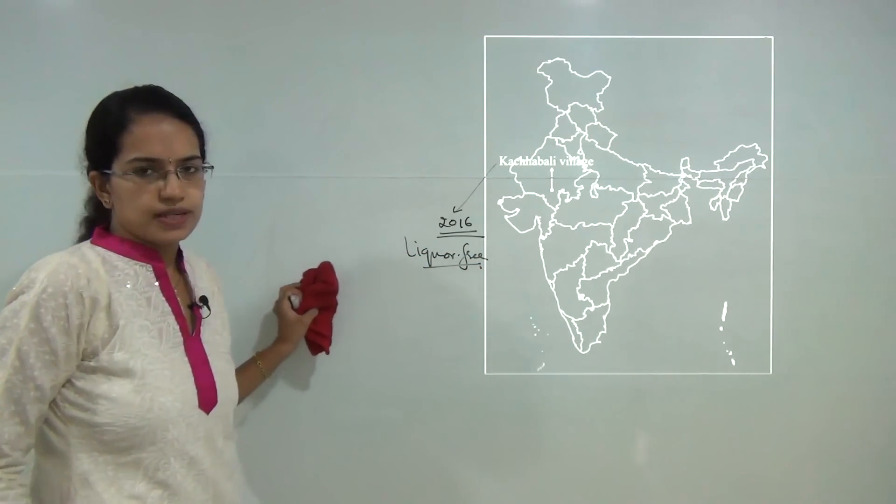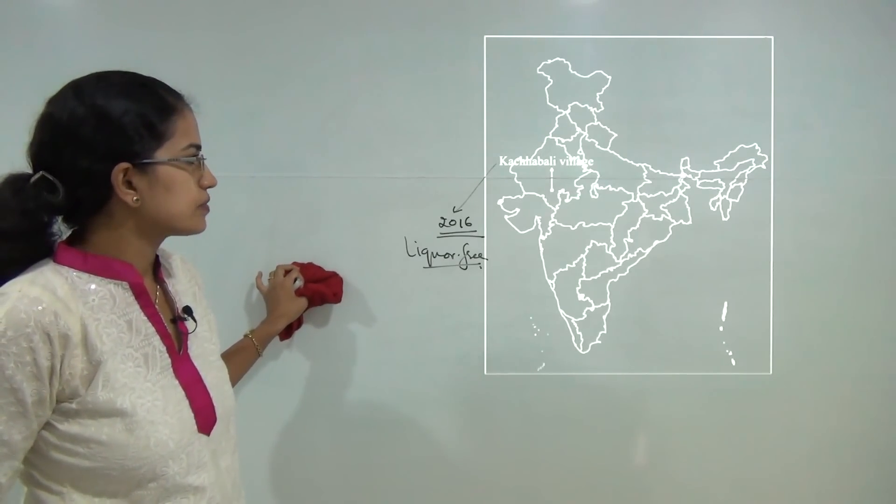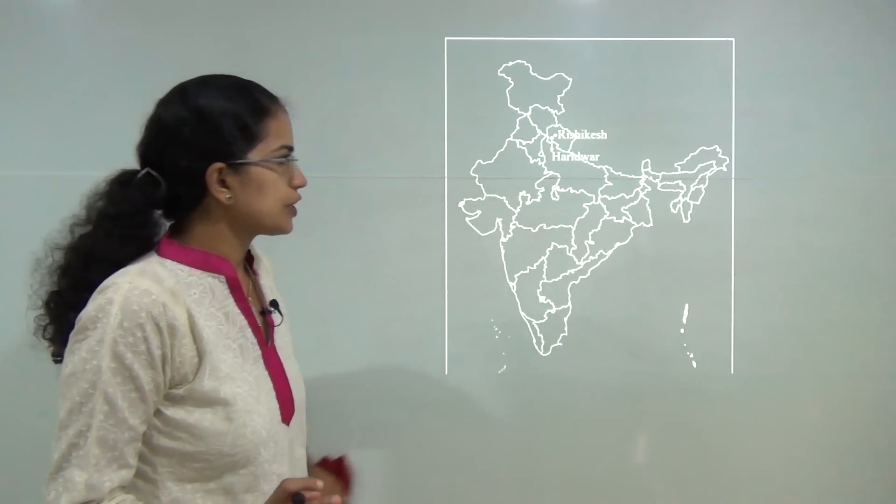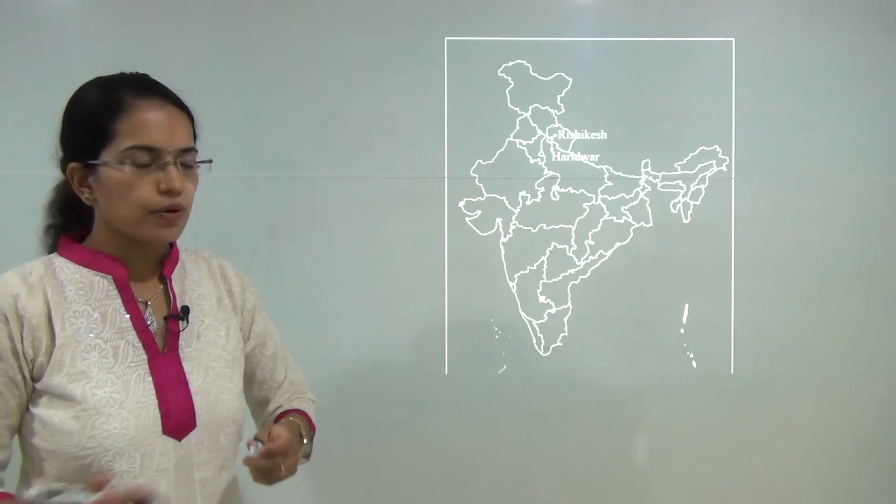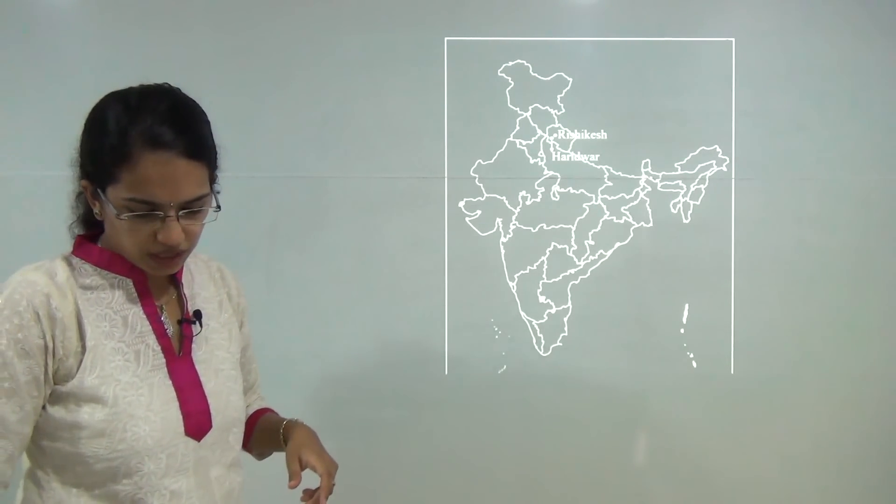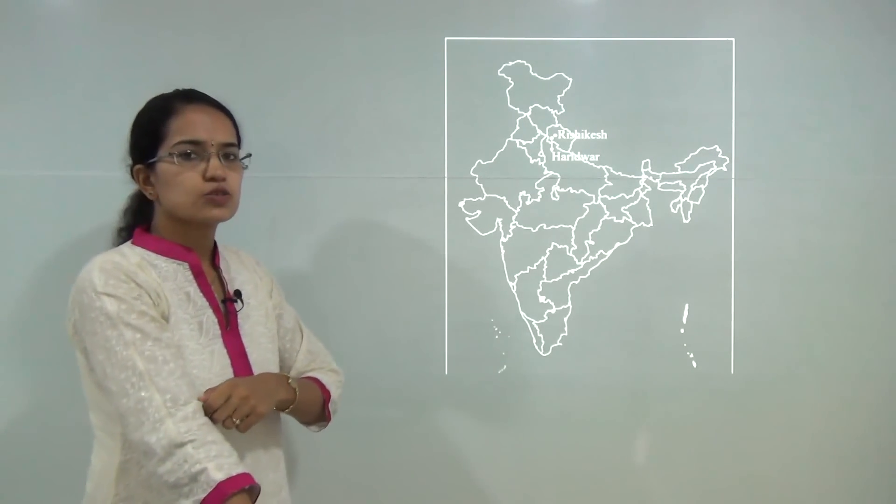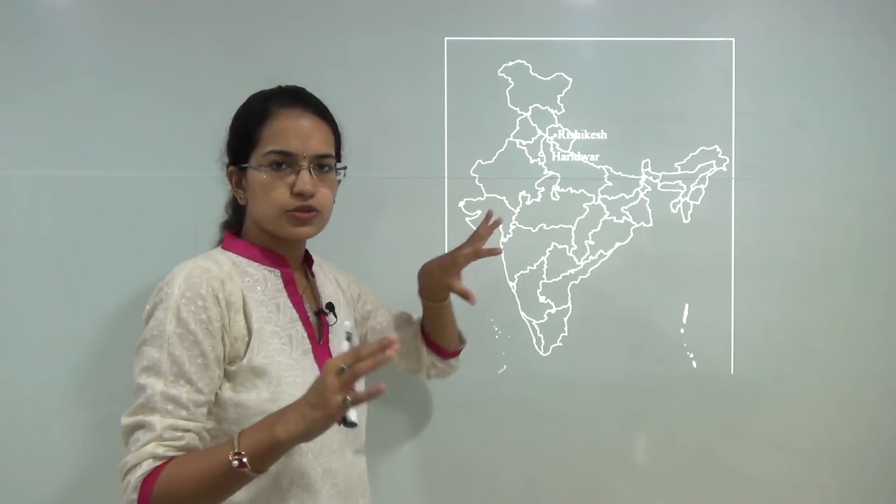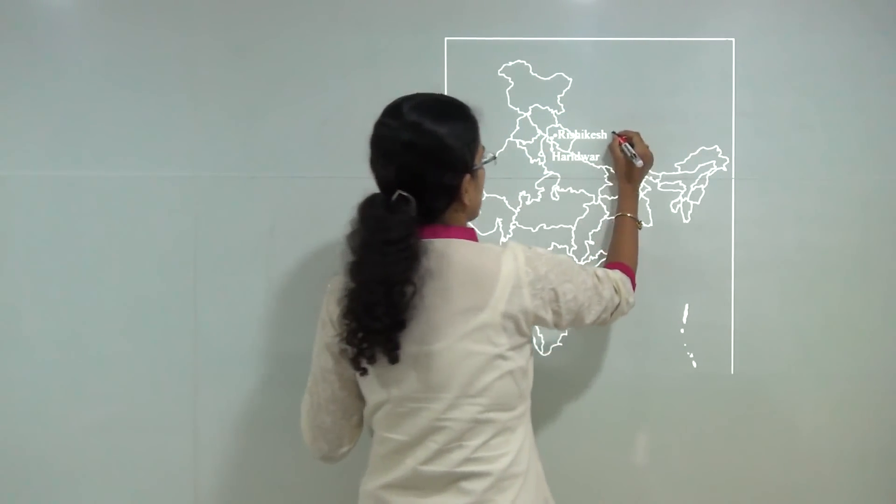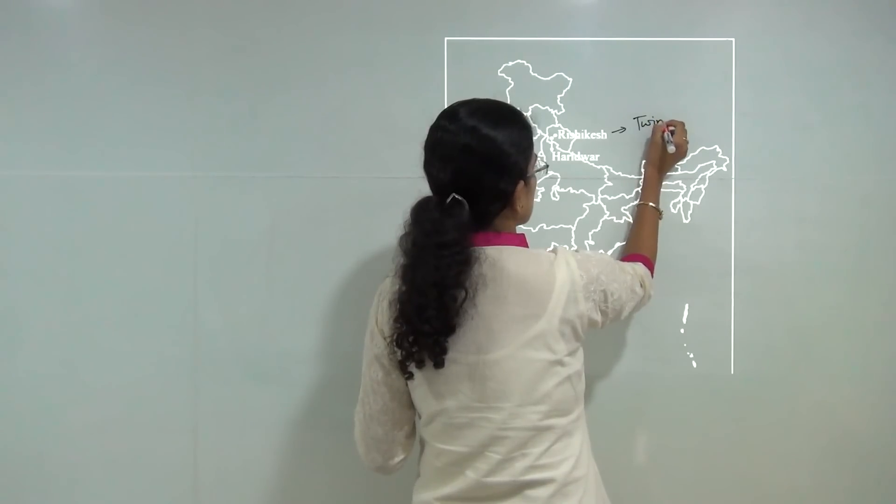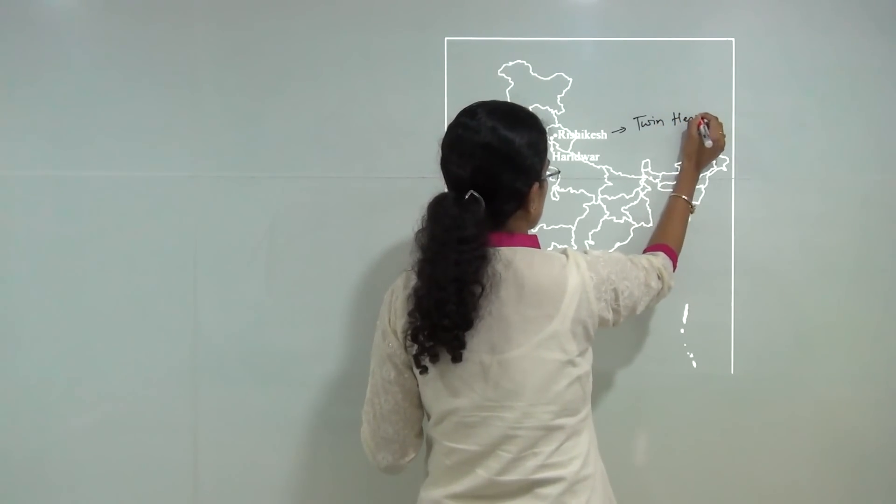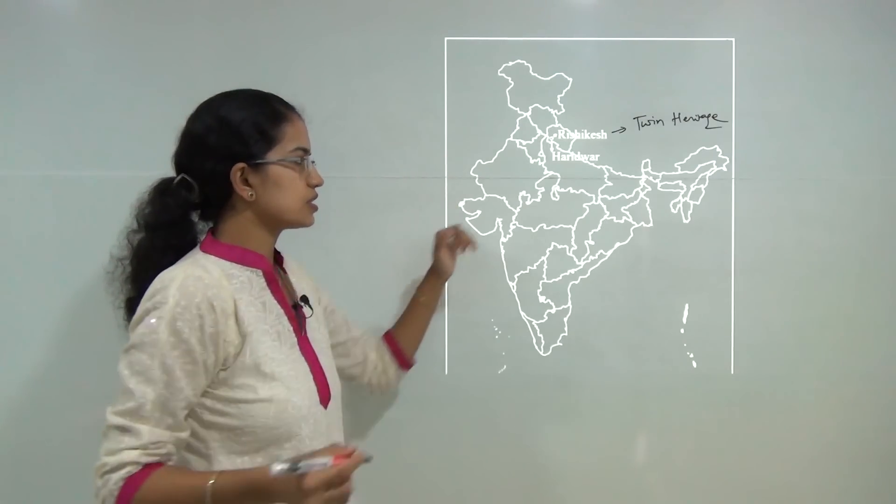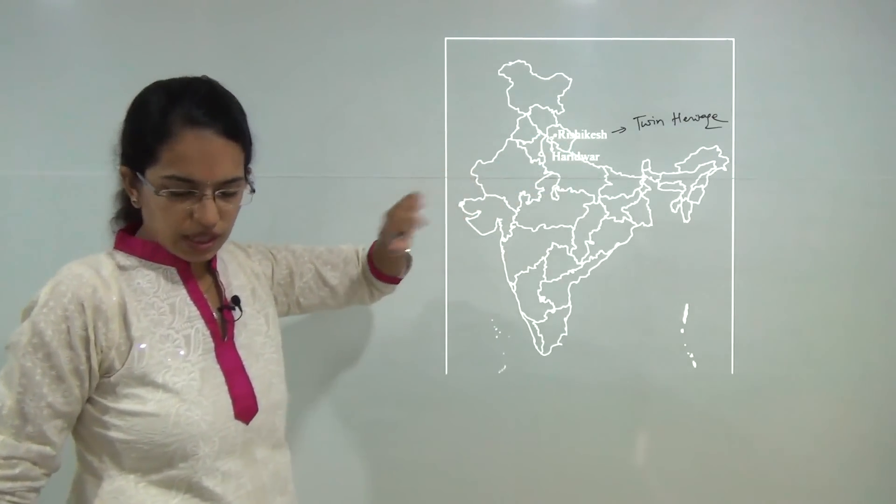Next you have Rishikesh and Haridwar. The Union Tourism Ministry has proposed that Rishikesh and Haridwar should be declared as the twin national heritage cities of India. They are under the tourism map of India and are planned to be declared as twin national heritage cities. These are the locations of Rishikesh and Haridwar in Uttarakhand.